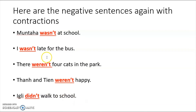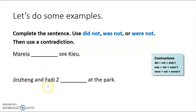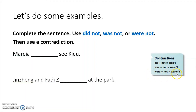Let's do some examples together. Complete the sentence using 'did not,' 'was not,' or 'were not' — those are the three choices. Then use a contraction: if you used 'did not,' use 'didn't'; if 'was not,' use 'wasn't'; if 'were not,' use 'weren't.'